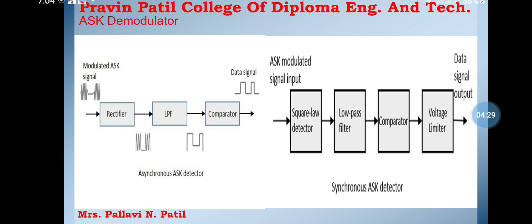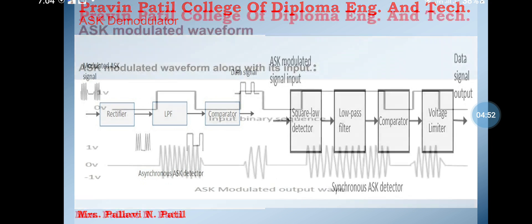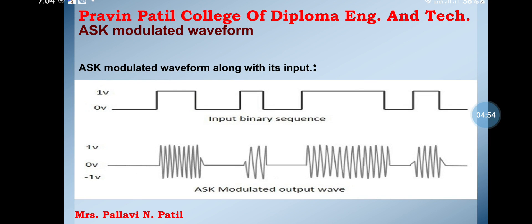The ASK input signal is given to the square law detector. The square law detector is one whose output voltage is the square of the amplitude modulator input voltage. The low-pass filter minimizes higher frequencies. The comparator and voltage limiter help to get a clean digital output. This is the ASK modulator waveform.